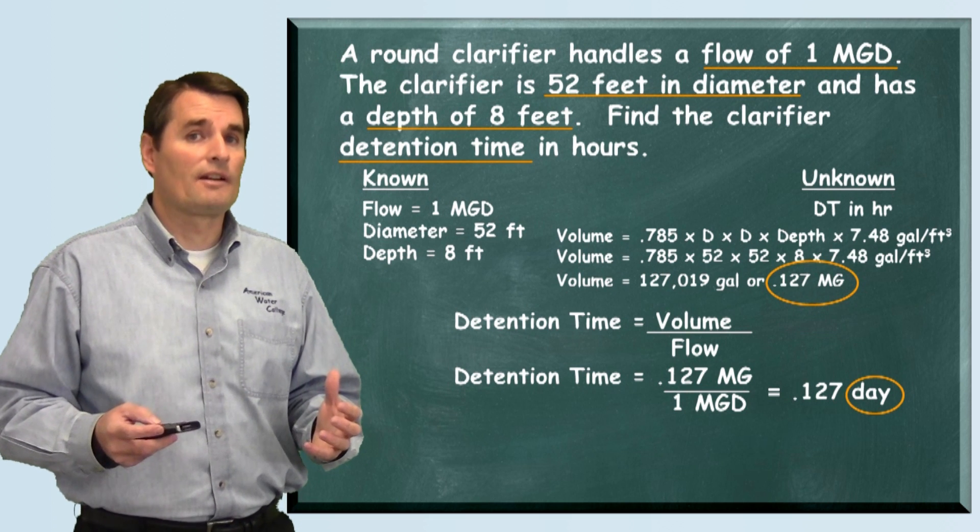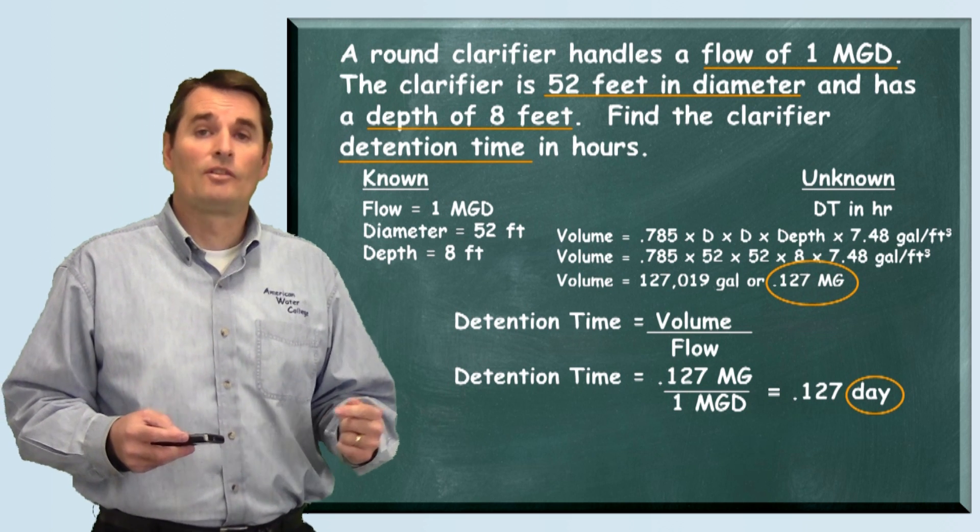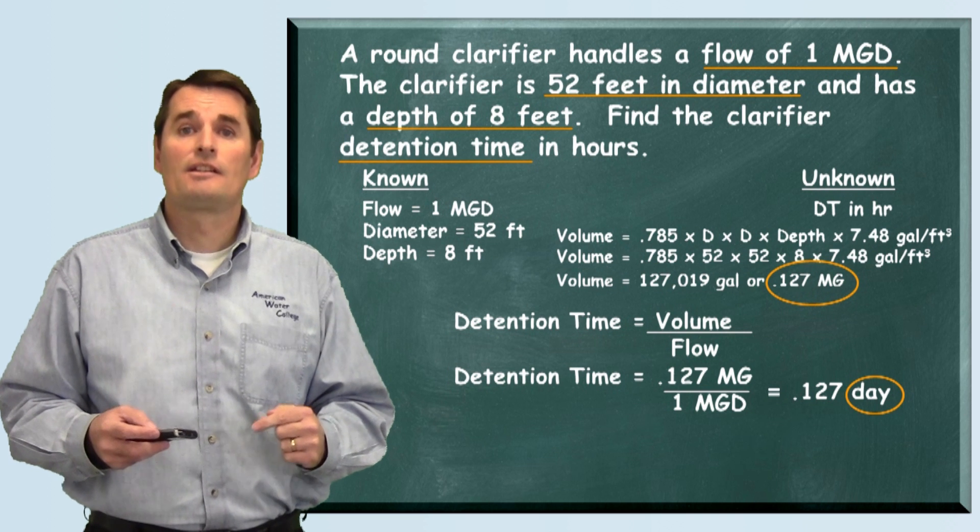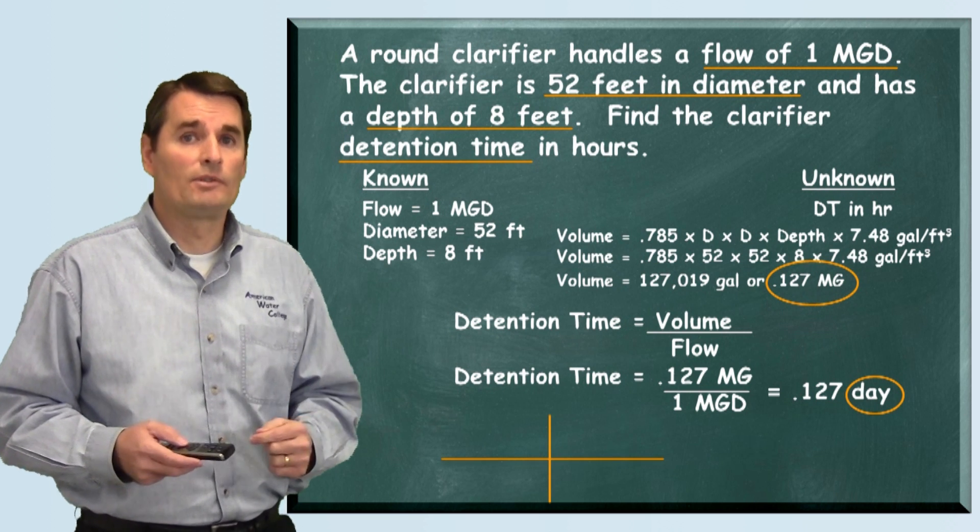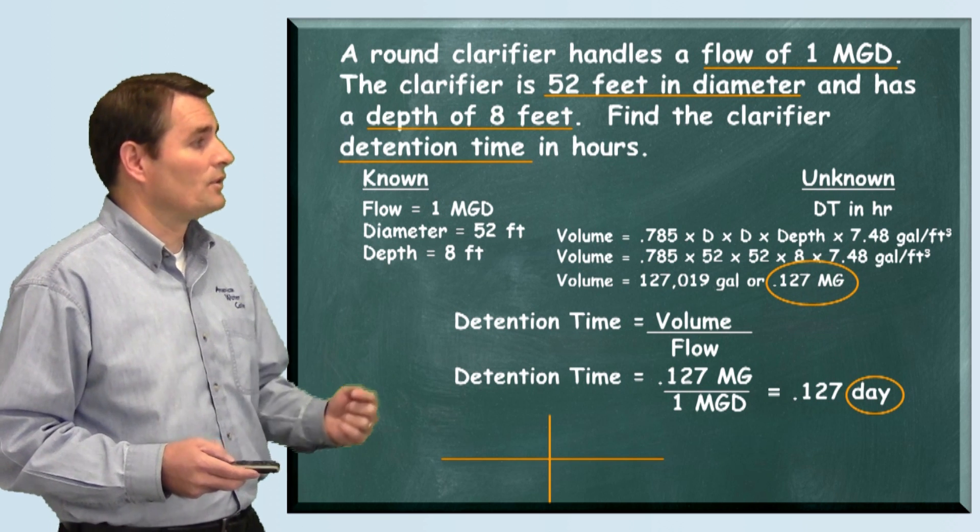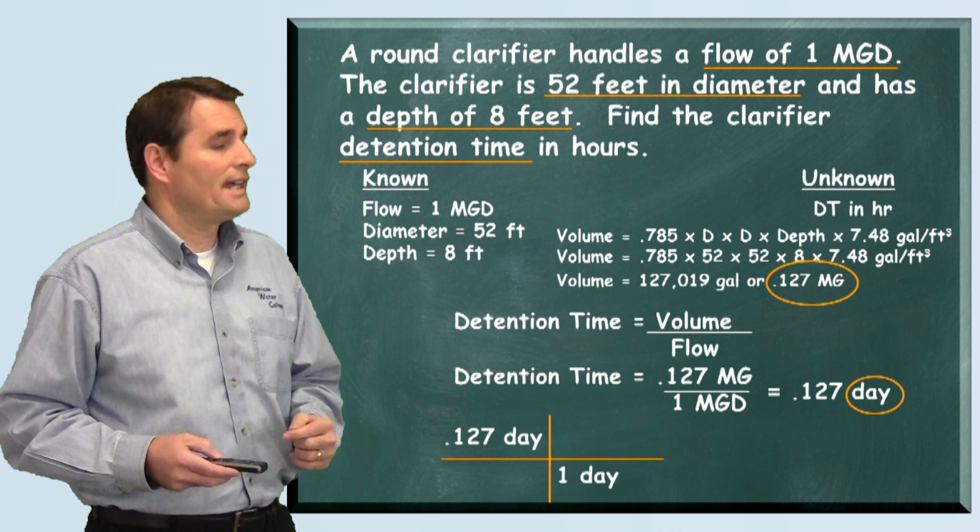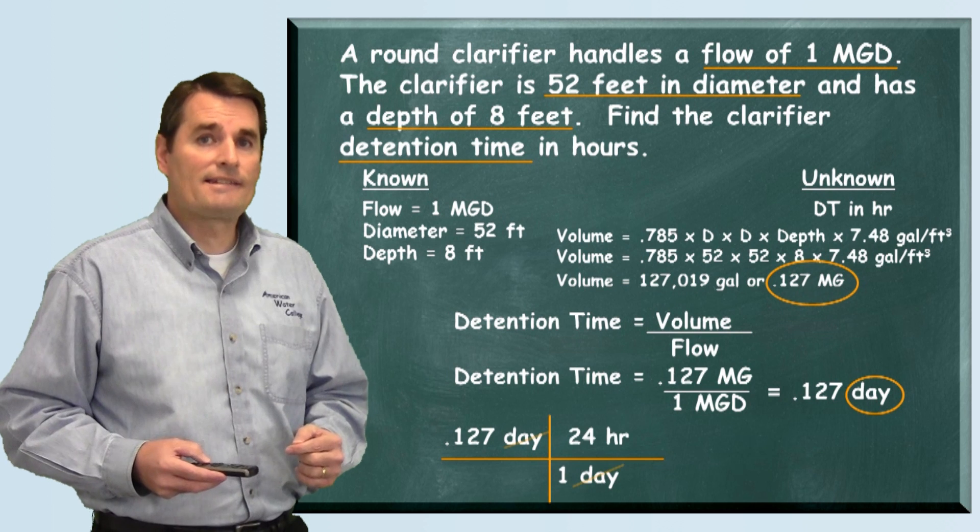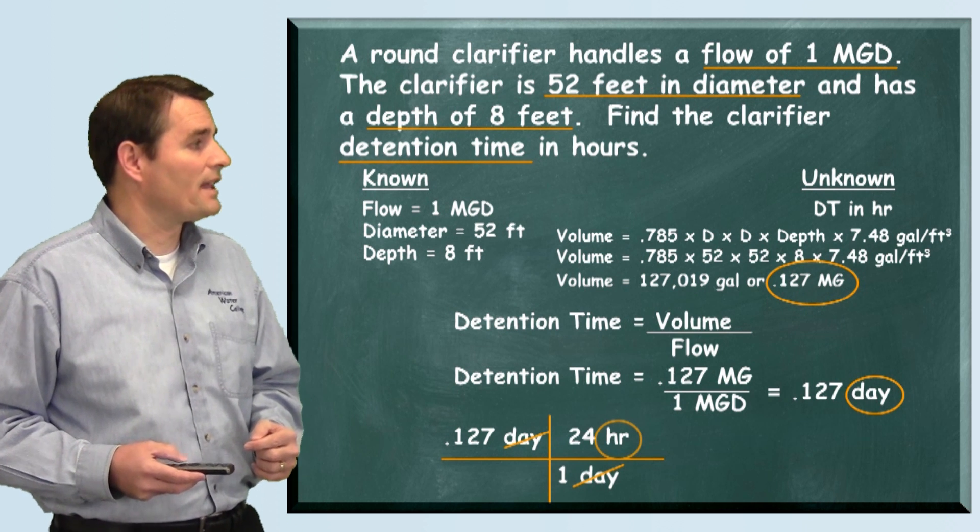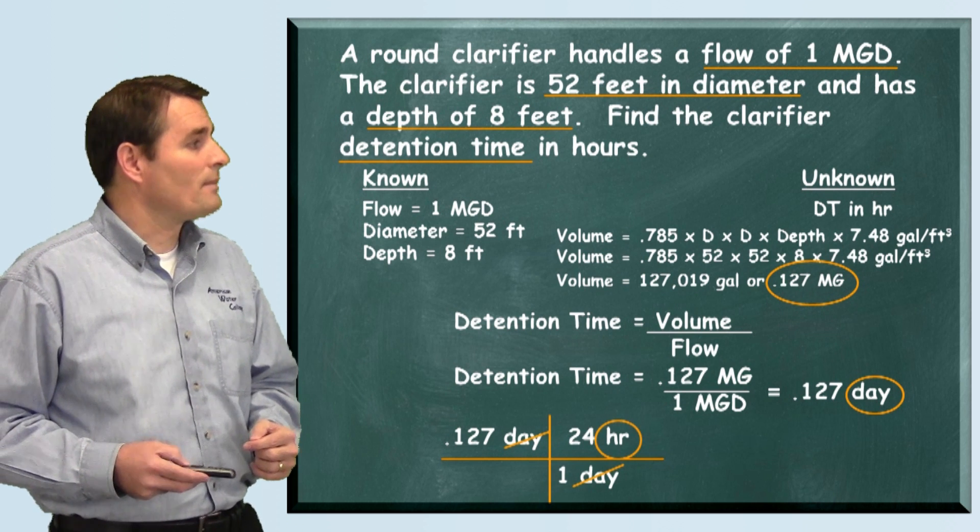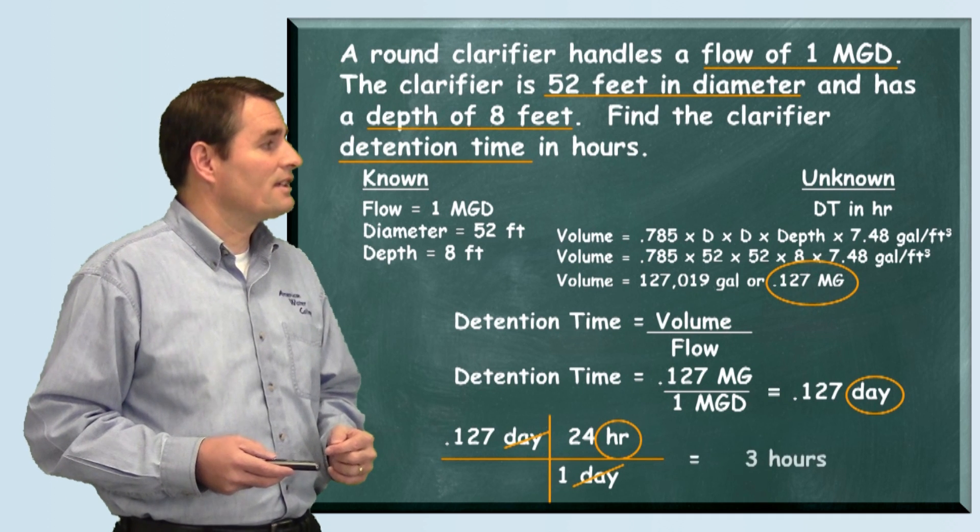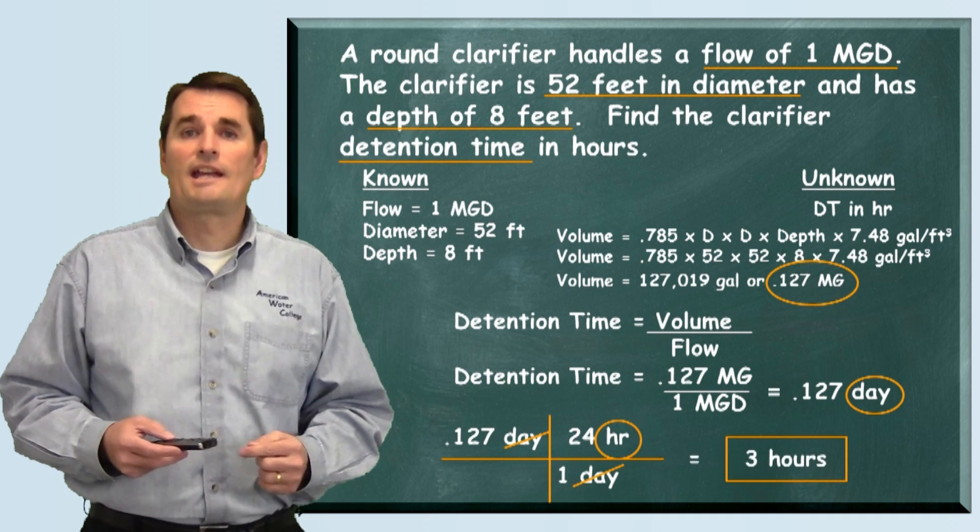The question wants our detention time in hours, so now we have to convert the days to hours. To do that, we'll do a simple unit conversion. We'll start with our 0.127 days, and we know that one day is 24 hours. Our days cancel each other out, we're left with hours. And when we do this math, we see that our detention time is 3 hours.